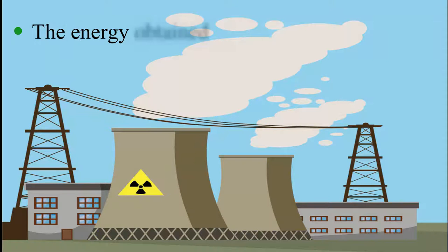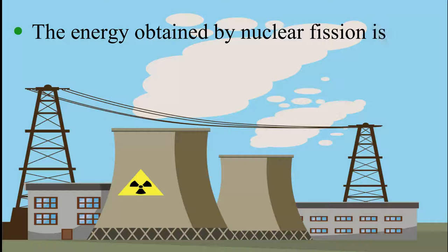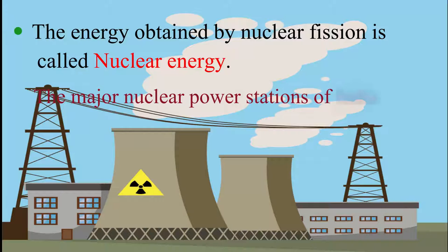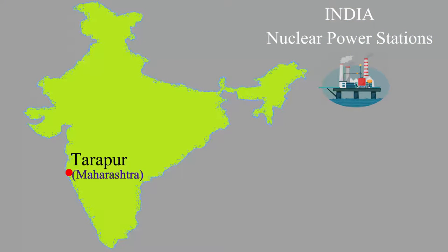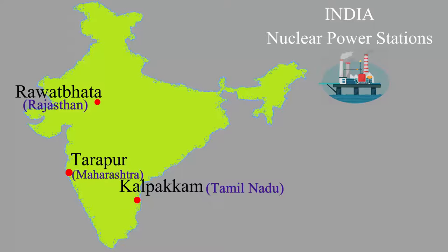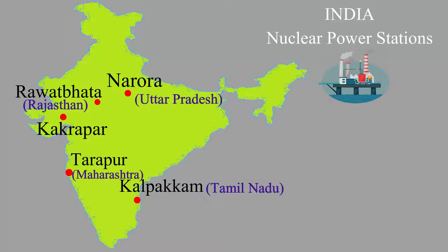The energy obtained by nuclear fission is called nuclear energy. Major nuclear power stations of India are Tarapur in Maharashtra, Rawatbhata in Rajasthan, Kalpakam in Tamil Nadu, Narora in Uttar Pradesh, Kakarpar in Gujarat, and Kaiga in Karnataka.